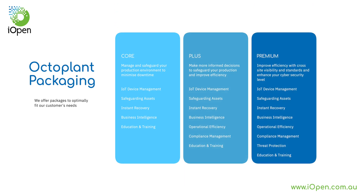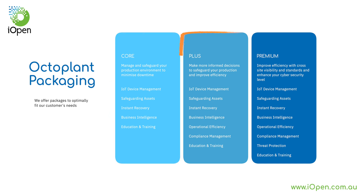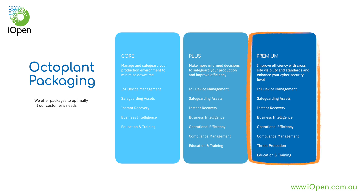OctoPlant is available in three packages tailored to suit your needs. The core package is focused on key value drivers, helping customers manage and safeguard their production environment to minimize downtime. Core provides IoT device management, instant recovery and insights via the business intelligence tool. In the plus version you can make more informed decisions — you have compliance management capability, the ability to extend into advanced workflows with scripting, and the ability to export your metadata. The premium package provides multi-site visibility with the ability to compare unlimited instances in the business intelligence hub, bidirectional synchronization of data across multiple production locations and the full threat protection capability.